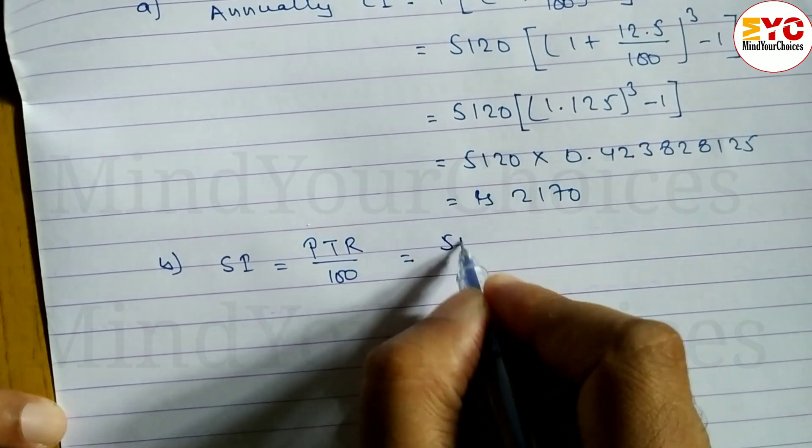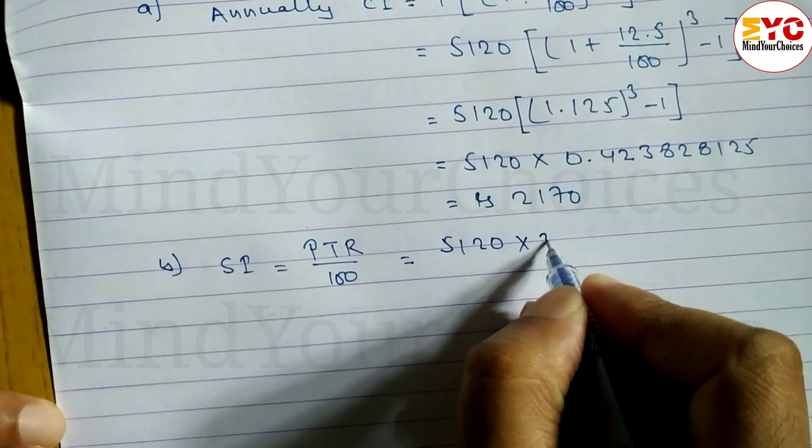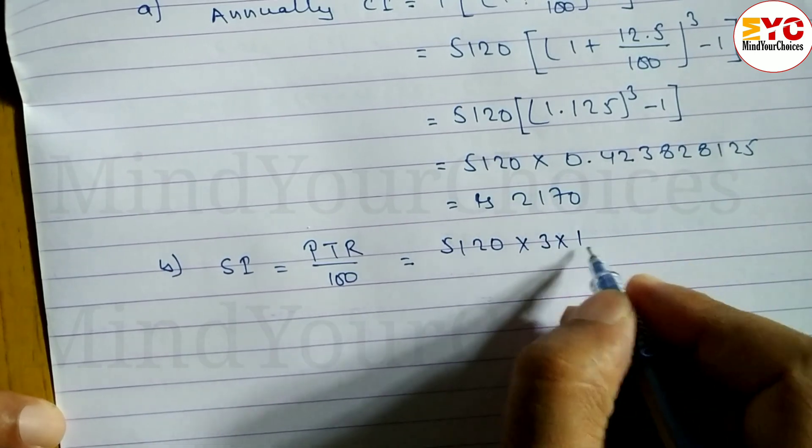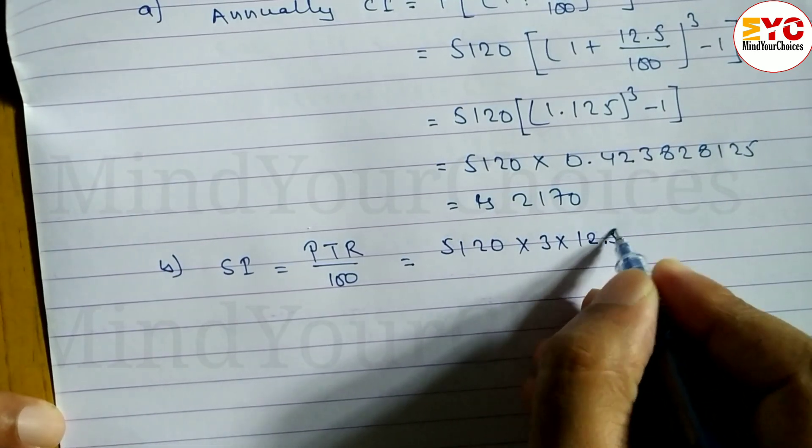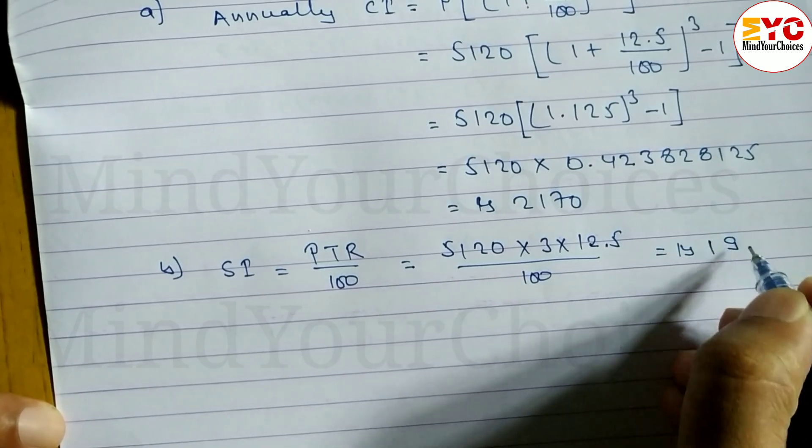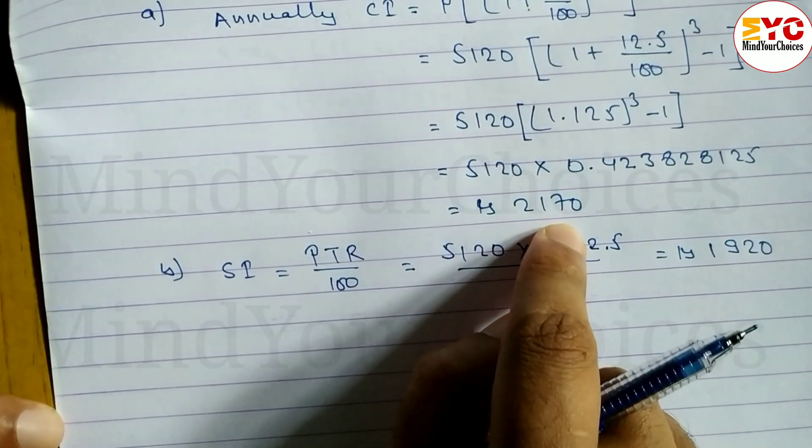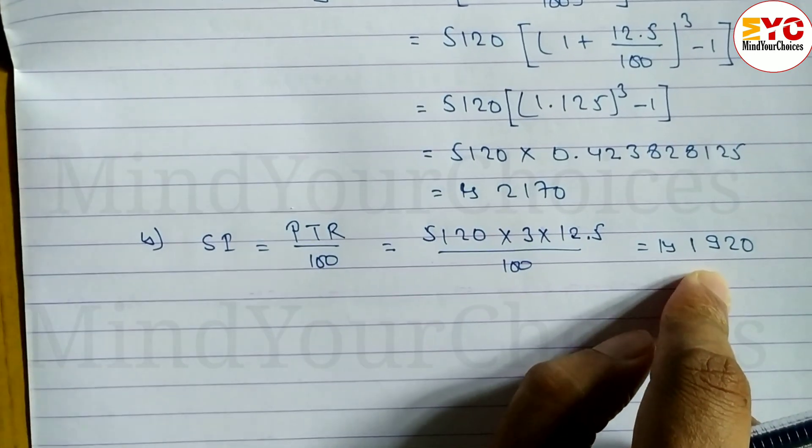P value is 5,120 into T, time is 3 years, into rate 12.5 divided by 100. When you calculate, we get Rs. 1,920. So annual compound interest is 2,170 and simple interest is 1,920.